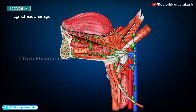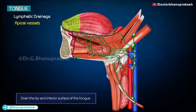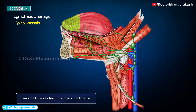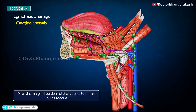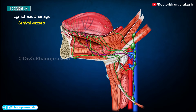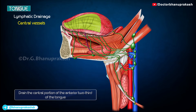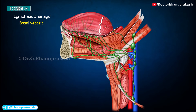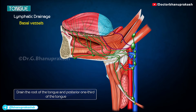The lymphatics of the tongue are grouped into four sets. Apical vessels drain the tip and inferior surface into the submental lymph nodes, with efferents draining to the submandibular nodes and some crossing the hyoid bone to reach the jugular omohyoid nodes. Marginal vessels drain the marginal portions of the anterior two-thirds unilaterally into the submandibular lymph nodes, then to the lower deep cervical nodes including jugular omohyoid nodes. Central vessels drain the central portion of the anterior two-thirds, passing vertically downwards between the genioglossus muscles and draining bilaterally into the deep cervical lymph nodes. Basal vessels drain the root and posterior one-third bilaterally into the upper deep cervical lymph nodes, including the jugulodigastric nodes.